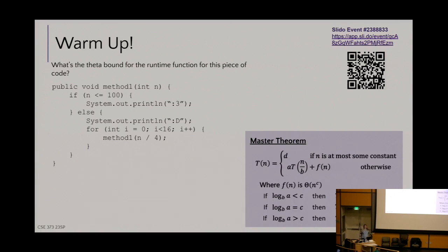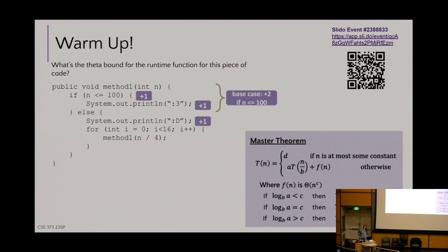Let's start with the least complicated stage of this: counting up the runtime counts for the non-recursive stuff. Maybe we give a plus one to that check on the base case, and then another plus one for printing out each of those print lines there. For the base case, I will represent it as D in the master theorem formula. Maybe that's two. I also have to keep in mind for what values of n it applies, and I just directly copy whatever that if statement is — for values of n less than or equal to 100, that's what I put in the branch of my recurrence.